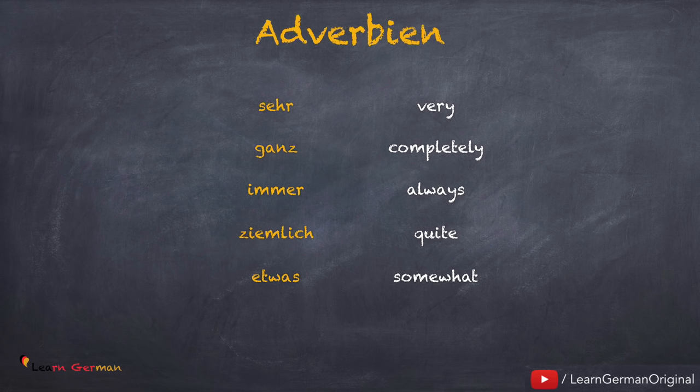Wir haben heute fünf Adverbien gelernt: sehr, ganz, immer, ziemlich, etwas. Jetzt schreib über ein paar Freunde — was für Eigenschaften haben sie?